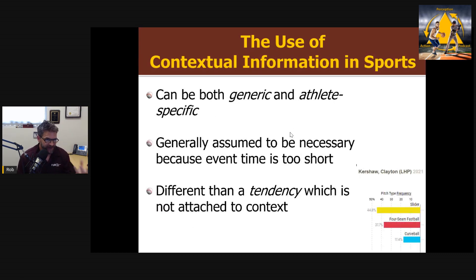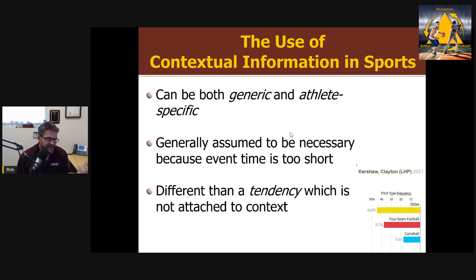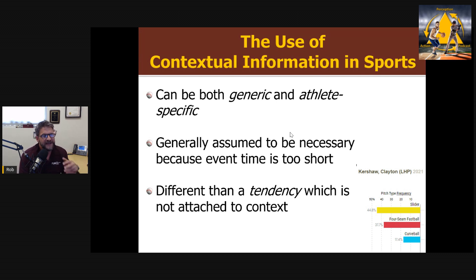These contextual priors can be both generic — like in baseball, pitchers tend to throw fastballs when they get behind in the count, like three balls and no strikes — or very specific to a certain athlete, who may throw certain pitch types in different counts. We assume we need these because once the action starts and information becomes available from the unfolding action — the ball is released or served — the time is so short. We need to get a head start in some way.